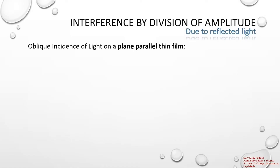Good day students. Today let us look into interference of light by division of amplitude due to reflected light. Here light is made to fall obliquely on a plane parallel thin film — that is, light is not falling perpendicularly on the thin film; it is falling at an angle theta upon the thin film.